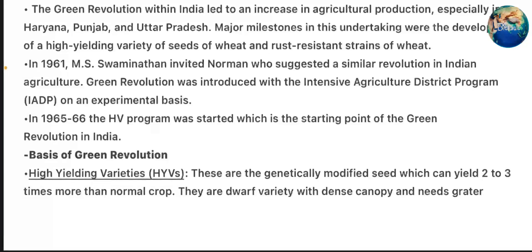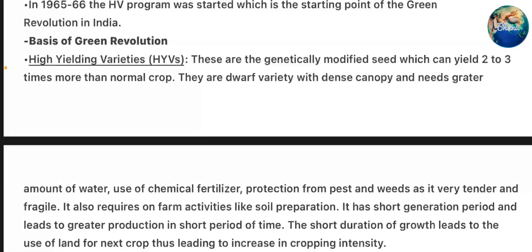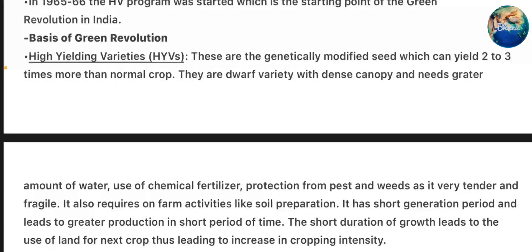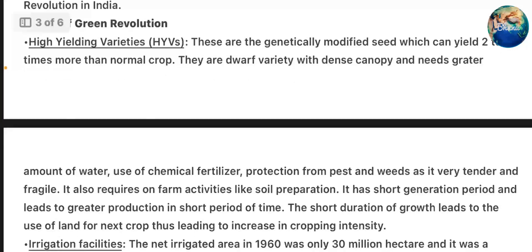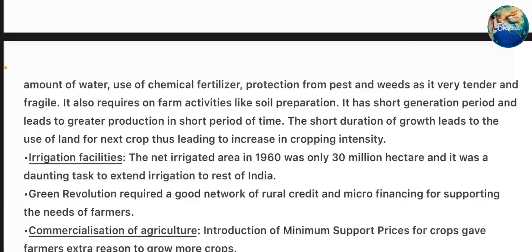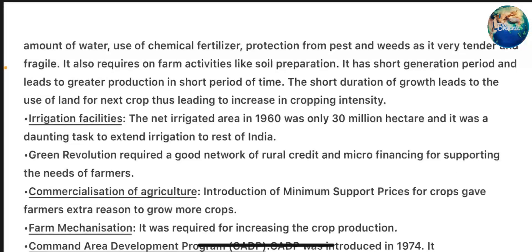Basis of Green Revolution - High-Yielding Varieties: These are genetically modified seeds which can yield two to three times more than the normal crop. They are dwarf variety with dense canopy and need greater amounts of water, use of chemical fertilizer, and protection from pests and weeds as they are very tender and fragile. They also require on-farm activities like soil preparation. They have a short generation period, leading to greater production in a short period of time, and the short duration of growth allows land use for the next crop, increasing cropping intensity.